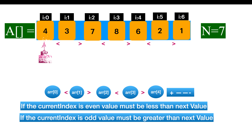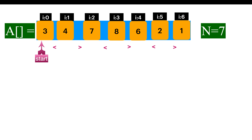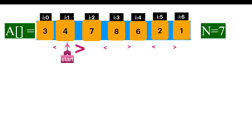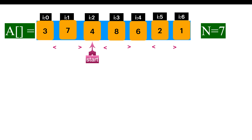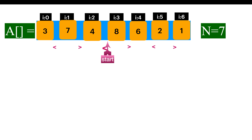Let's solve this. We start from index 0. As it is an even index, the current element must be less than the next element, which is not the case. So swap it. Then move on to the next index. Now as it is an odd index, the current element must be greater than the next element, but it is not. So swap it. Now move on to index 2. As it is an even index, the current element is already less than the next element. So no swap required.